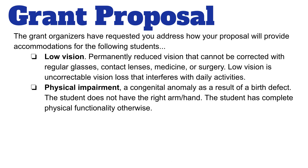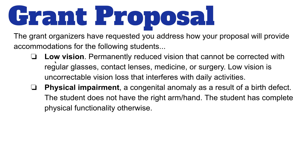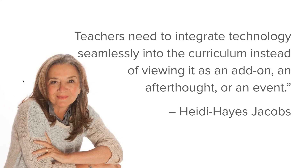In your grant proposal, you need to address two students: a student with low vision, and a student with a physical impairment who does not have a right arm and hand. Specifically address how you're going to increase, maintain, or improve the functional capability of these two students. Remember — seamless is the key. If it sounds like an add-on, an afterthought, or an event, it's not the way to go. There are more resources and videos on the Canvas page to learn more about assistive technology.